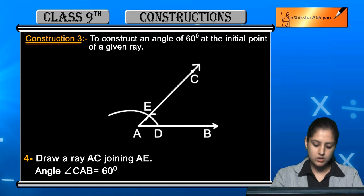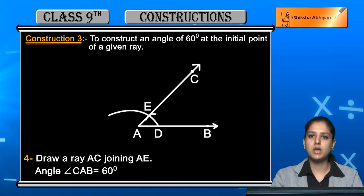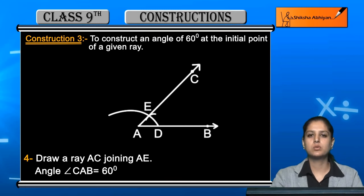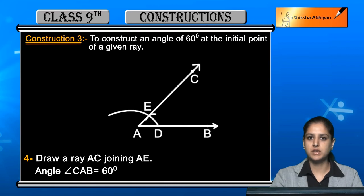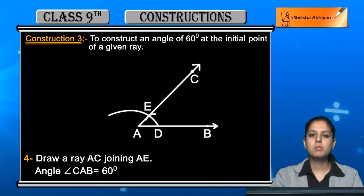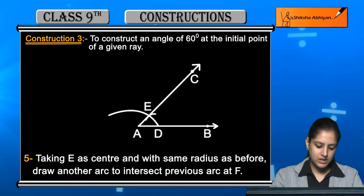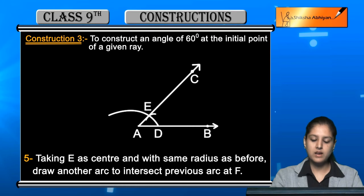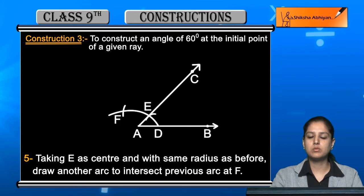अब इसी angle को extend करके 120 degree का बनाएंगे, क्योंकि 60 का double होता है 120। So इसी construction के अंदर एक और construction है: to construct an angle of 120 degrees। Angle CAB तो बन गया जो 60 degree का है। Compass का radius same रखना है, change नहीं करना। अब E point पर compass रखिए और same radius से एक और arc draw कीजिए जो पहले वाली arc को intersect करे — उस point को नाम दीजिए F।